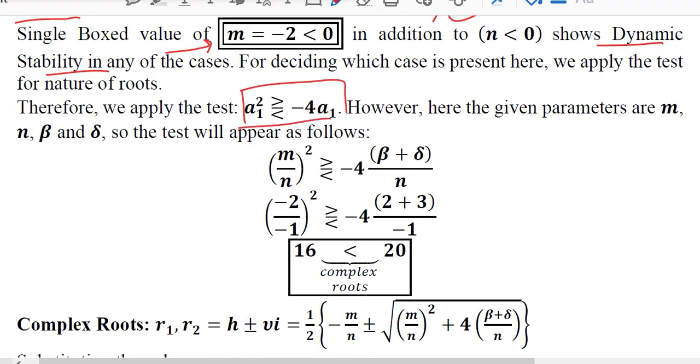Keeping these expectations in our mind we can now check the nature of roots for which we do this discriminant test. And the value of a1 is here, the value of a2 is here. So we are putting these values and value of m and value of n, beta, delta and n they are all substituted.